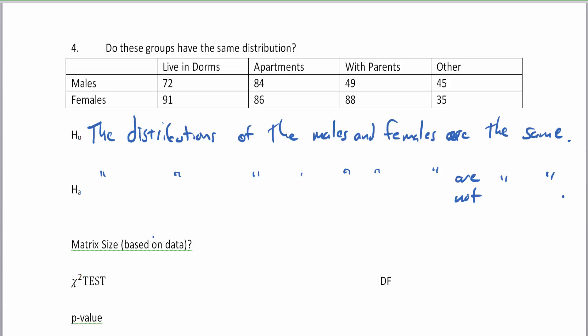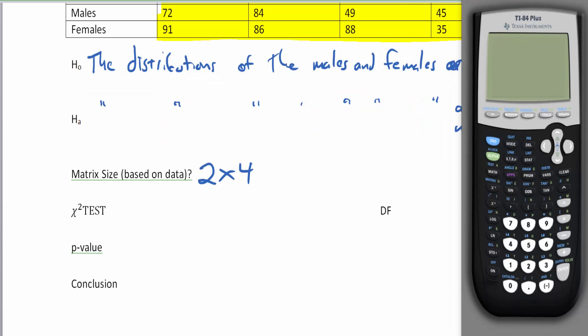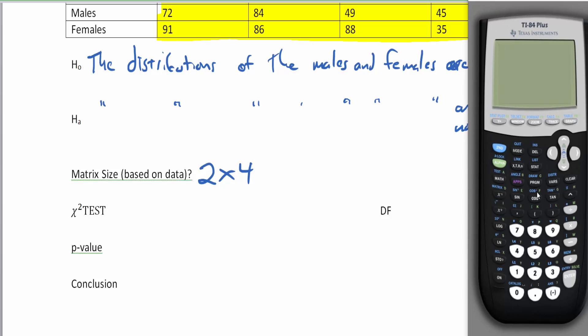Let's look at our matrix size based on this data. We don't include totals or titles, so we have two rows, which makes sense since this is a test for homogeneity, and four columns. The matrix size is two by four. Let's go to our calculator, click second x to the negative one power, move over to edit, and hit enter. Two, enter, four, enter.